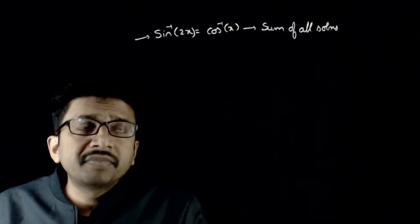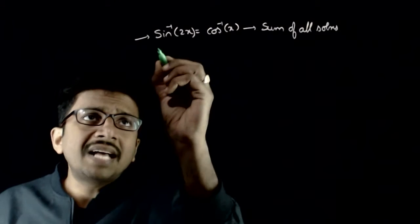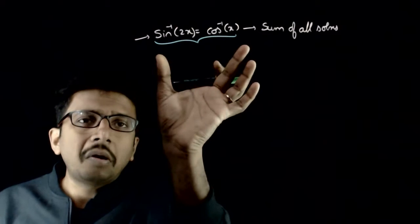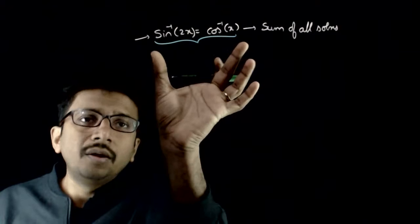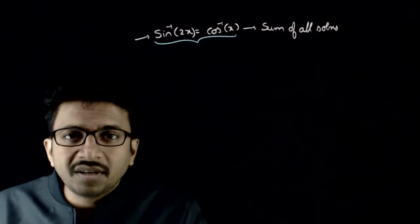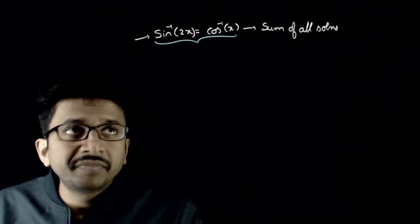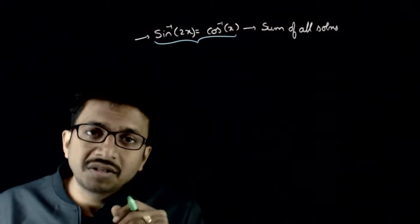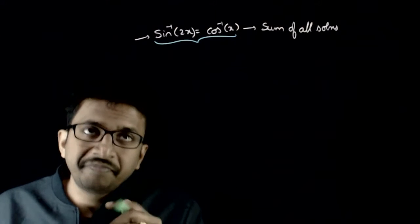Welcome students. In this question you are asked to find the sum of all the roots of this equation: sine inverse of 2x is equal to cos inverse of x.